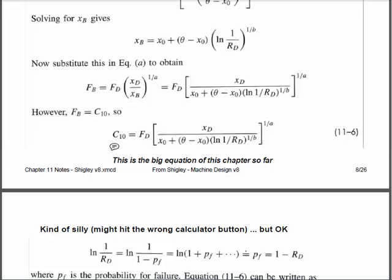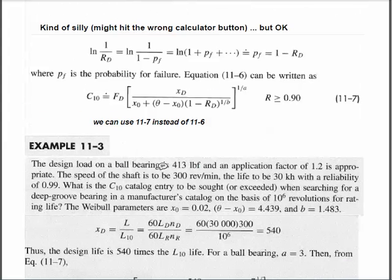We looked at a problem, then went through talking about reliability, and folded the reliability equation into what I said is the big equation of this chapter so far. We put in the load we intend to apply (amplified by a load factor), plug in the ratio of desired life to catalog life, plug in the reliability we expect, and some other given constants — run the numbers and get a load to use in the catalog to find a bearing. This is equation 11-17.